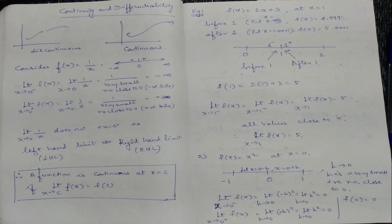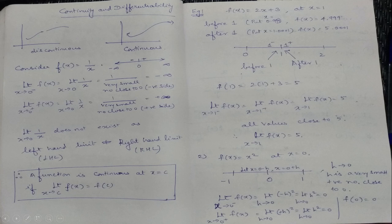Now, coming to this topic — continuity and differentiability. What do you mean by a continuous function? What do you mean by a discontinuous function? Look at this graph: this graph is discontinuous at this point — there is a break in it. Automatically, this is a discontinuous function. What about this graph? This is a continuous function; the graph is everywhere continuous from here to here.